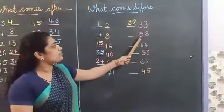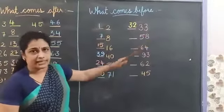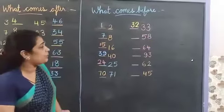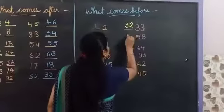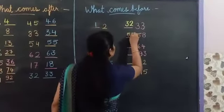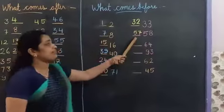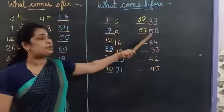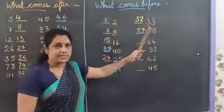And next number is 58. 58 ke pehle kya tha? 5, 7 — that is 57. 57 comes before 58.